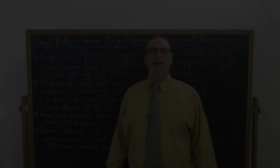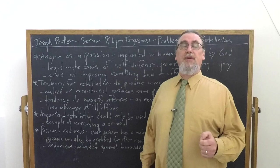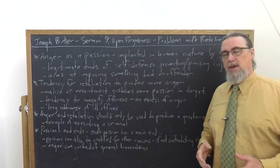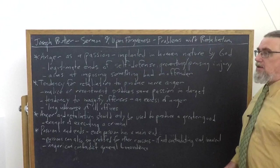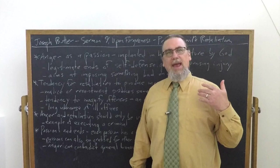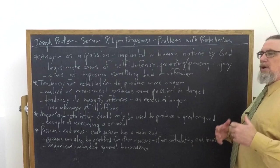In his sermon number nine, Upon Forgiveness of Injuries, Joseph Butler is going to set out for us some of the problematic aspects of retaliation. That is the natural operation and aim of the feeling, passion, or emotion of anger, which sometimes he calls resentment. He goes back and forth between the two. And he tells us anger is a passion or desire, an affectation which has been implanted in human nature by God.